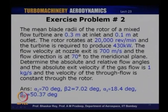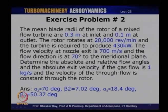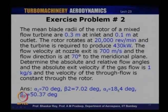The second exercise problem: the mean blade radii of the rotor of a mixed flow turbine are 0.3 m at inlet and 0.1 m at outlet. The rotor rotates at 20,000 rpm and the turbine is required to produce 430 kW. The flow velocity at nozzle exit is 700 m/s at 70° to the meridional plane. The gas flow rate is 1 kg/s and the through-flow velocity is constant through the rotor. Determine the absolute and relative flow angles and absolute exit velocity. Answers: α2 = 70°, β2 = 7.02°, α3 = 18.4°, β3 = 50.37°.